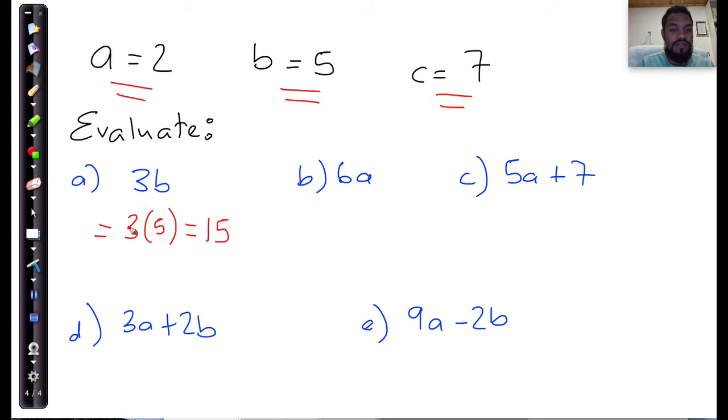Remember, there are alternate notations for this. 6a, that is just simply 6 multiplied by the value of a, and the value of a is 2. So that's going to give me 6 times 2, which is 12.